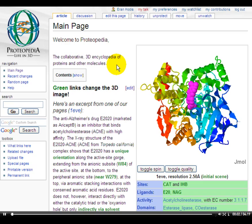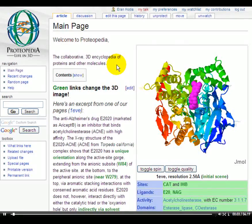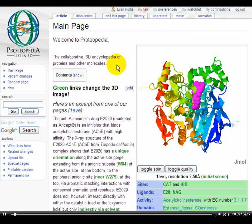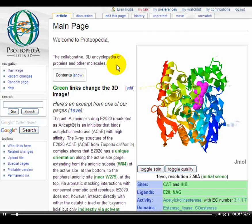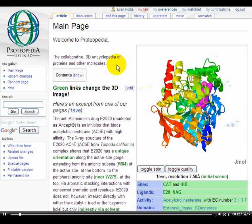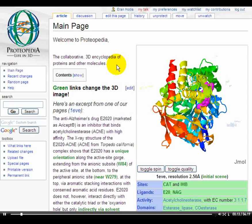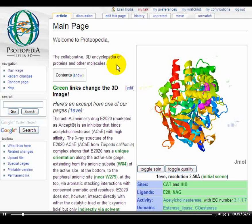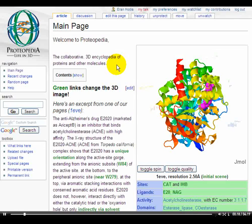Welcome to Proteopedia, the collaborative three-dimensional encyclopedia of proteins and other molecules. Proteopedia was designed and inspired by the belief that structural information needs to be presented in an intuitive manner in order to reach its potential for value.